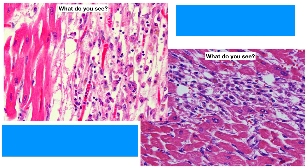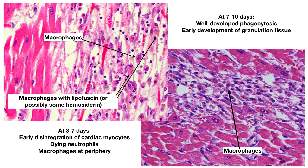On the left side, the dead cardiac myocytes have all been cleaned up. The neutrophils are basically gone, and what you see are macrophages that have come in and engulfed everything. Within them, you can see some finely granular yellow pigment — likely lipofuscin from the dead cardiac myocytes, though there could also be some hemosiderin if there was hemorrhage associated with the infarct. On the right, you can also see macrophages. At 3 to 7 days, you see early disintegration of cardiac myocytes, dying neutrophils, and macrophages at the periphery. At 7 to 10 days, there is well-developed phagocytosis and early development of granulation tissue. Both images show macrophages but no well-developed granulation tissue, so this is around seven days — somewhere in between, as it is a spectrum.